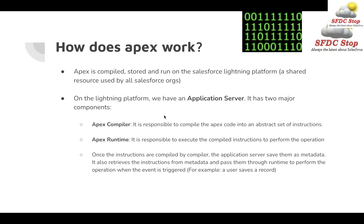On the Lightning Platform we have the application server, which has two major components. The first one is the Apex compiler — this is responsible for compiling the Apex code into an abstract set of instructions, converting it into machine-readable code like 0s and 1s. The next is Apex runtime, which is responsible for executing the compiled instructions to perform the operation. So first we compile the human-readable code into machine-readable code, and then we use the compiled instructions to perform the actual operation.